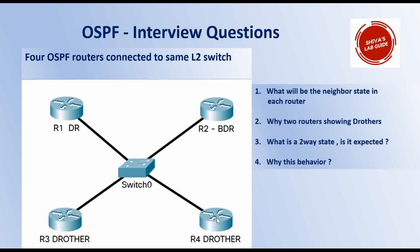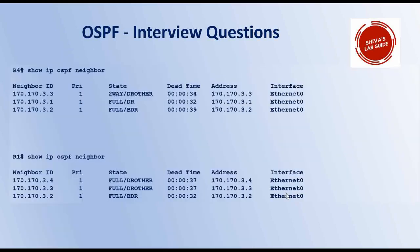If you give 'show IP OSPF neighbor' from R4, which is a DR other, it will show full neighborship with the designated router (DR) and with R2, which is the backup designated router. With R3, it will show a two-way DR other state. So from R4's output, you can see full neighborship with R1 and R2 (your DR and BDR), but with R3 it is stuck in two-way state because it is also a DR other.